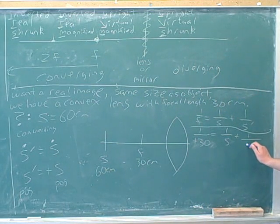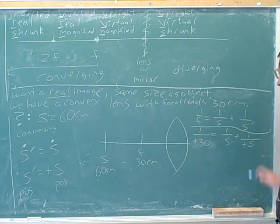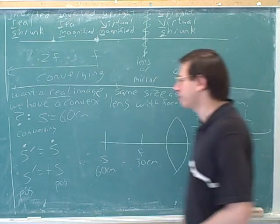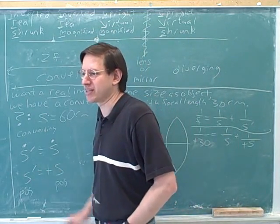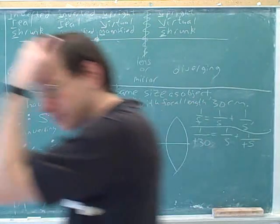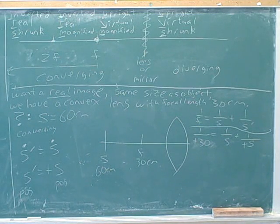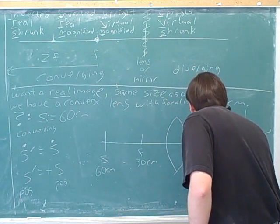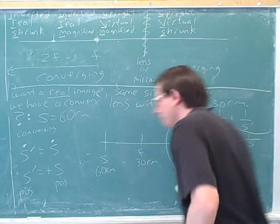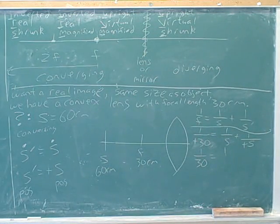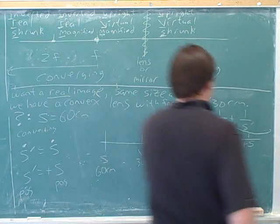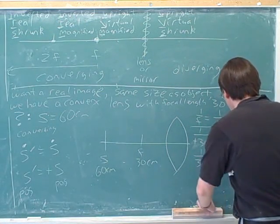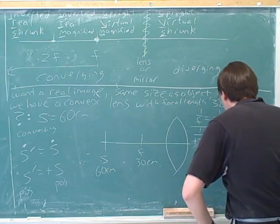So anyway, what should I write down here? So 1 over s plus 1 over s. Yeah, you could put in a positive sign. But the upshot is just that s prime will be equal to s. All that work was just to see that s prime is going to be equal to s. And then? Good.